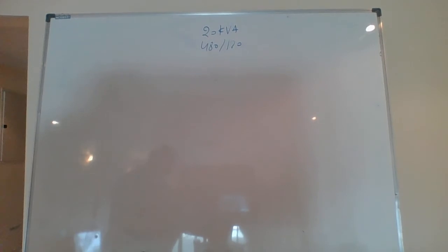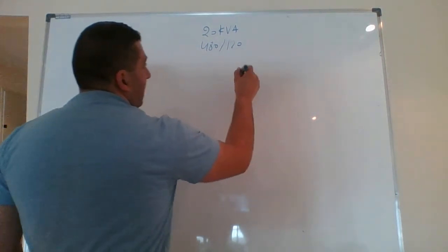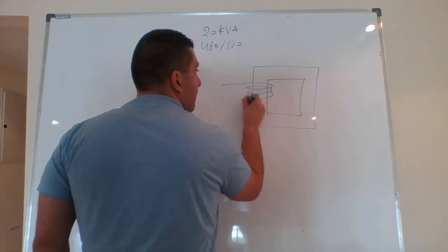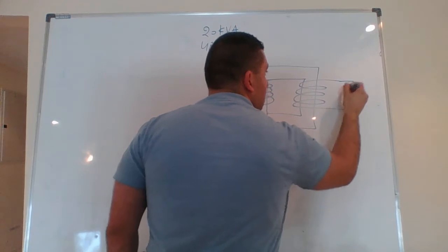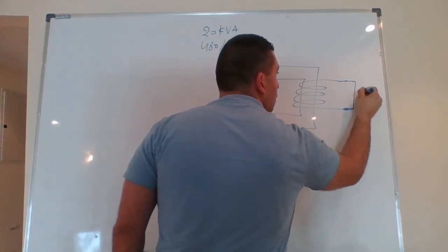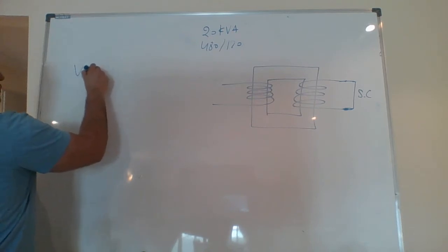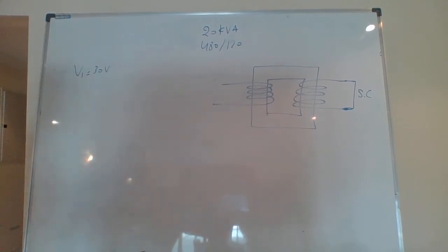During the short circuit test, rated current is applied to the 480-volt winding with the 120-volt winding shorted. A short circuit is applied on the 120-volt winding, and the readings obtained are: V1 equals 35 volts and P1 equals 300 watts.